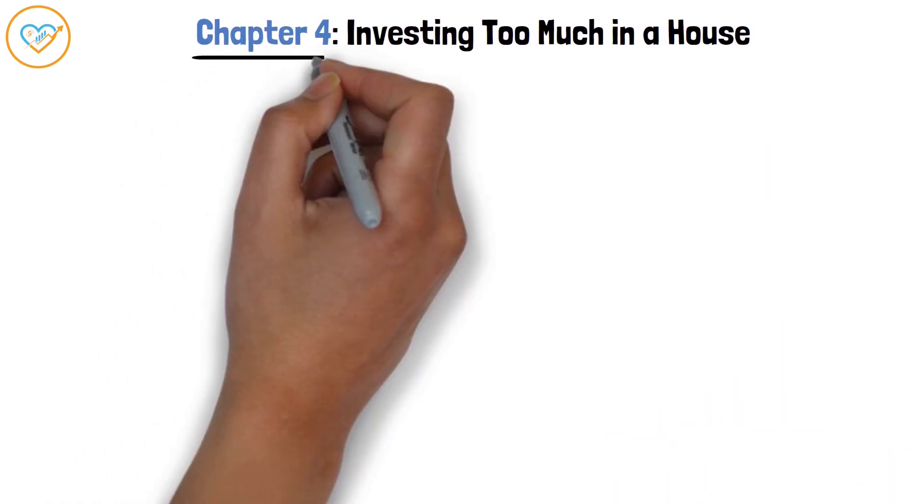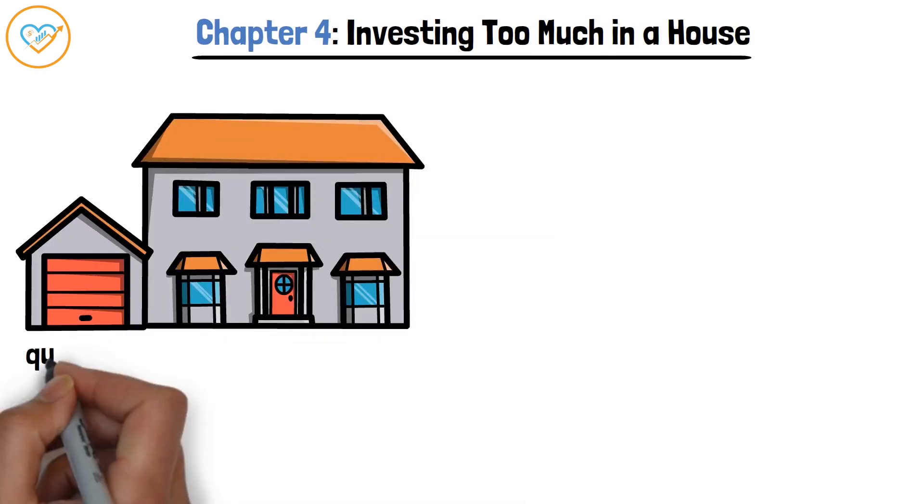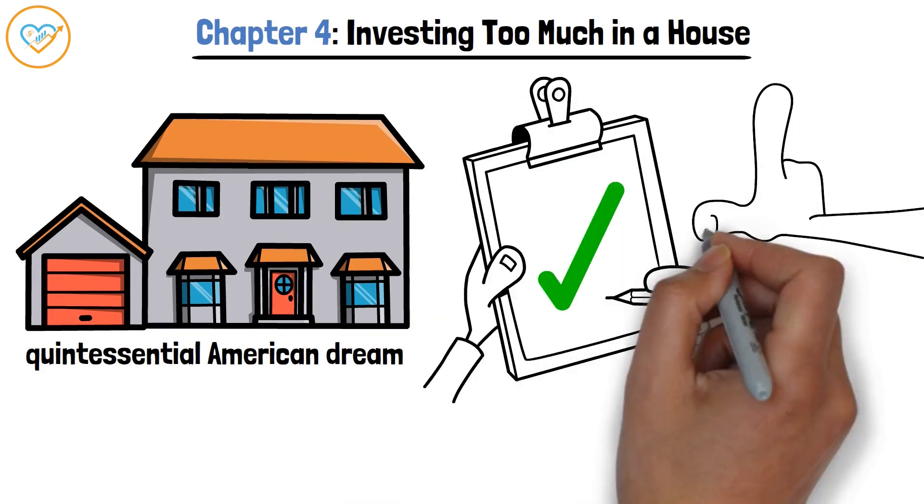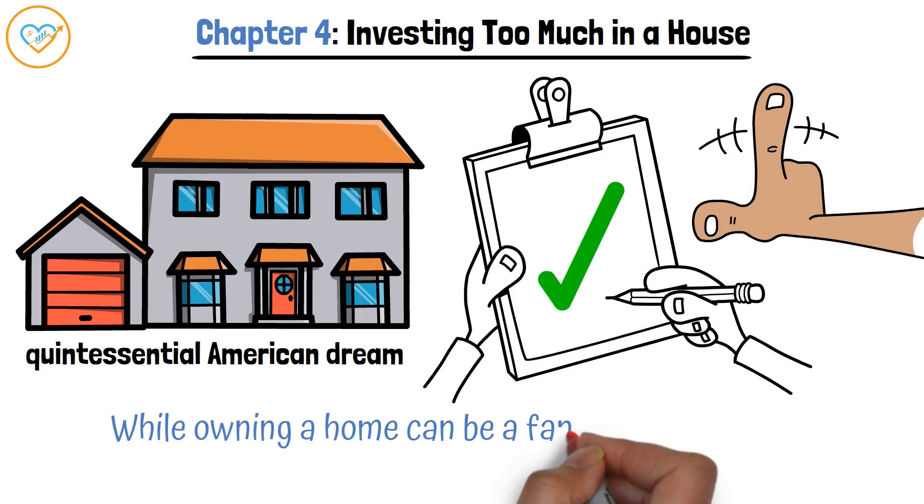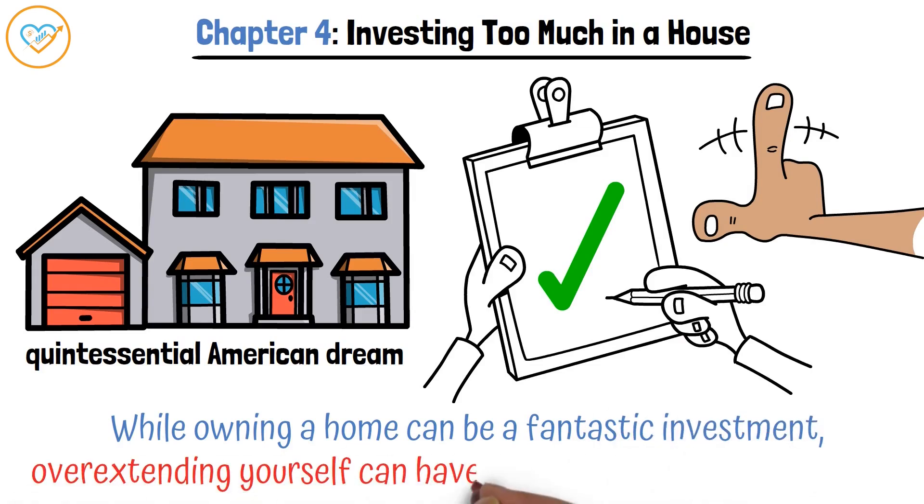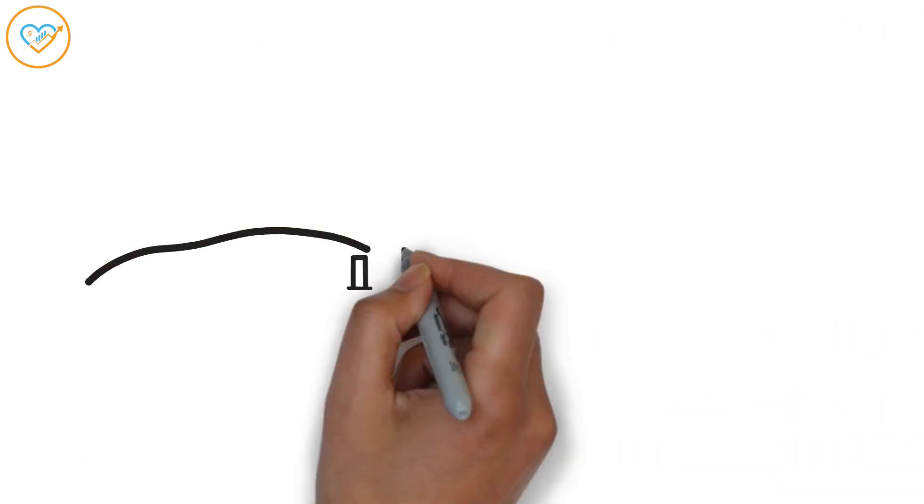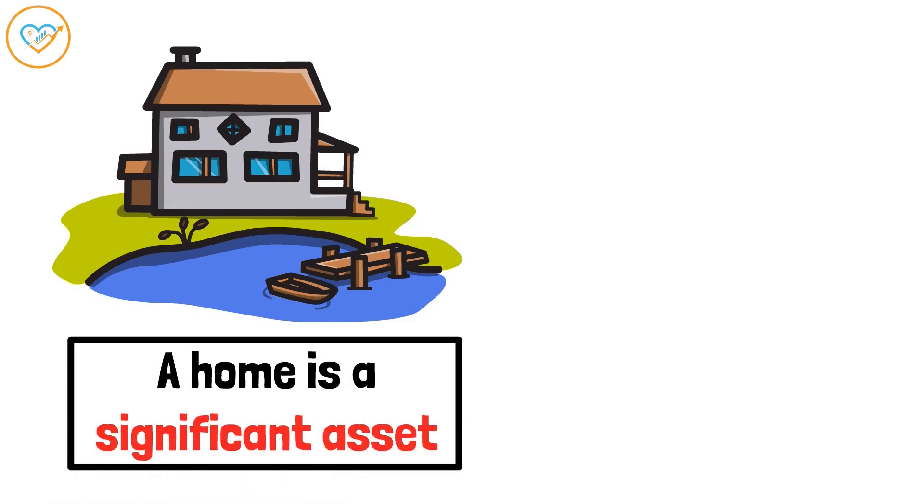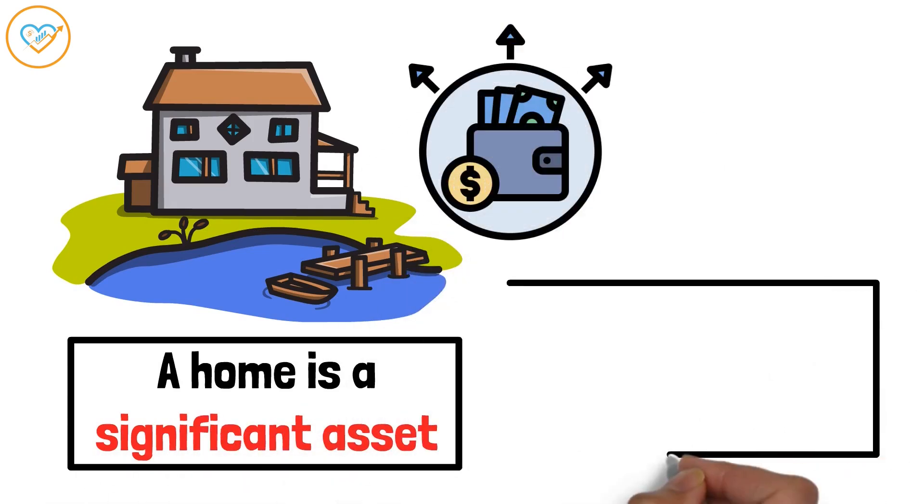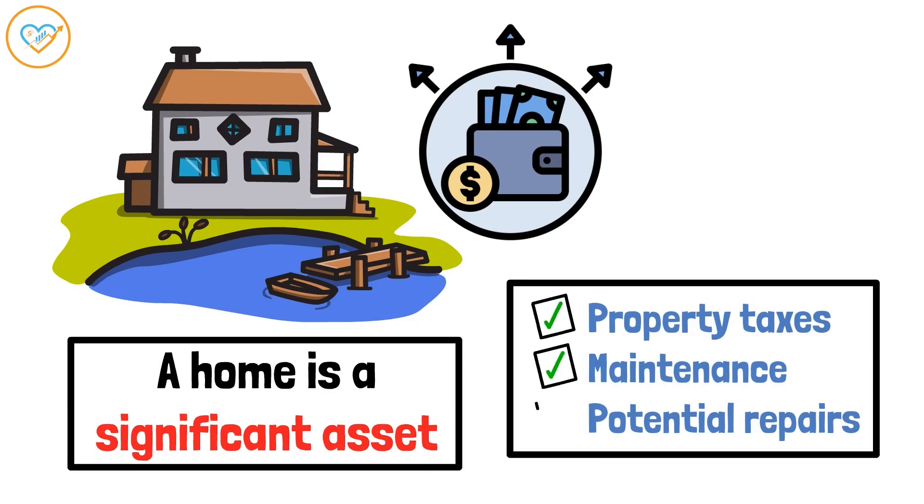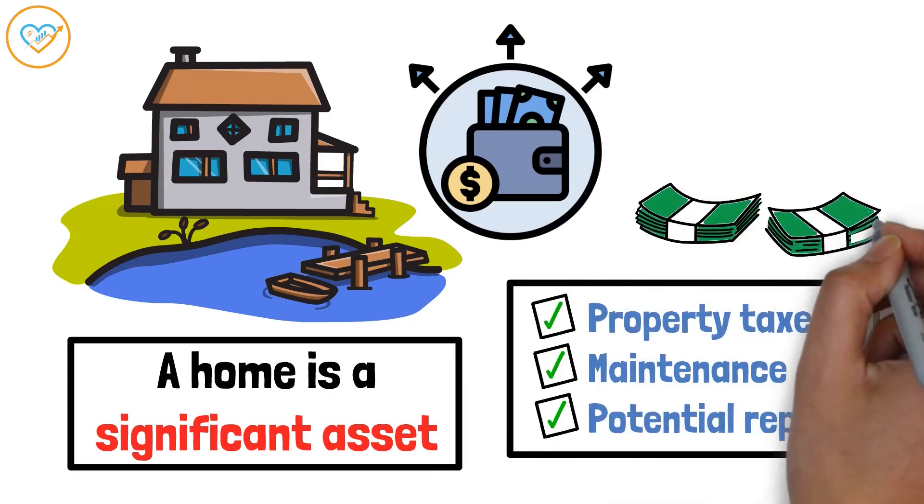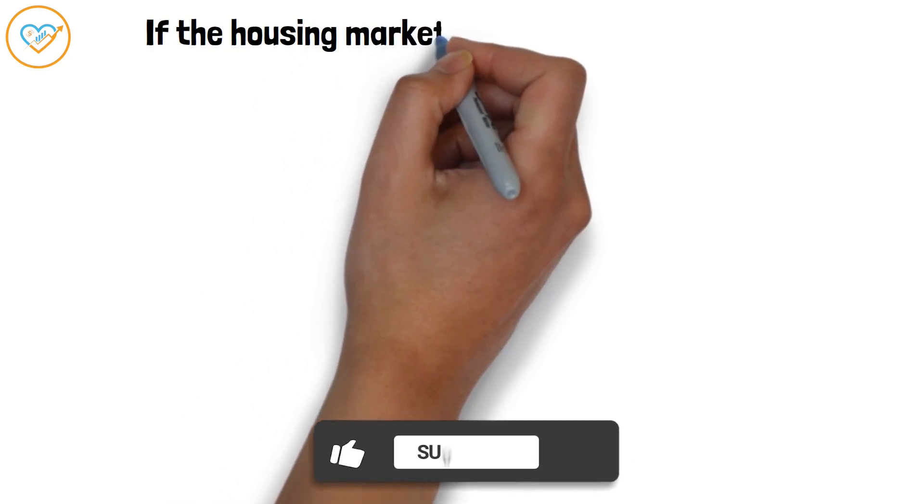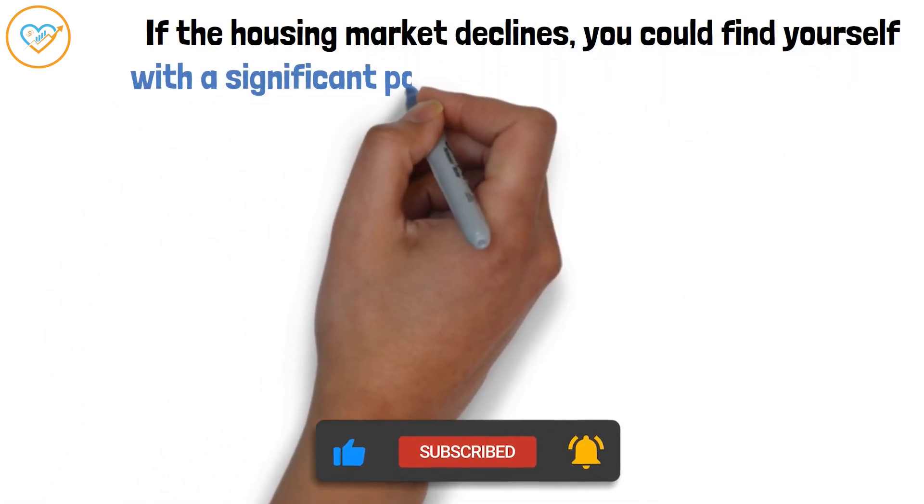Chapter 4: Investing too much in a house. Homeownership is often seen as the quintessential American dream, but it's essential to approach it with a clear head, not just heart. While owning a home can be a fantastic investment, overextending yourself can have severe financial consequences. It's easy to get caught up in the excitement of finding the perfect house. But remember, a home is a significant asset, but it's also a massive expense. Property taxes, maintenance, and potential repairs can quickly add up. Moreover, tying up a large portion of your wealth in one asset can be risky. If the housing market declines, you can find yourself with a significant portion of your net worth underwater.